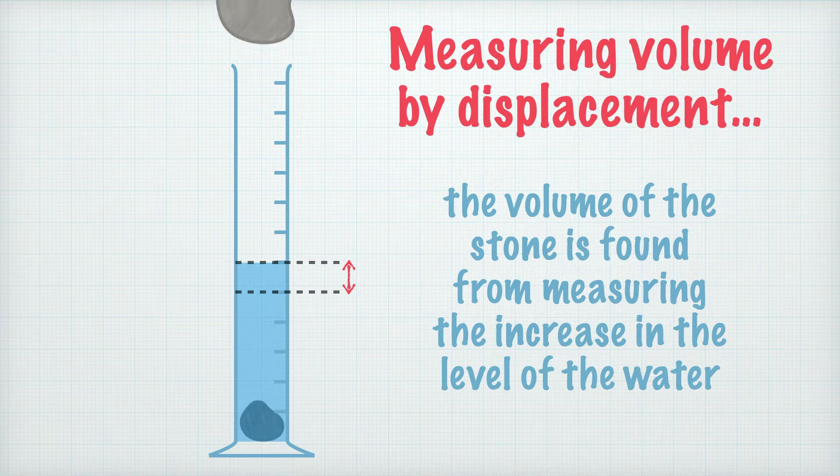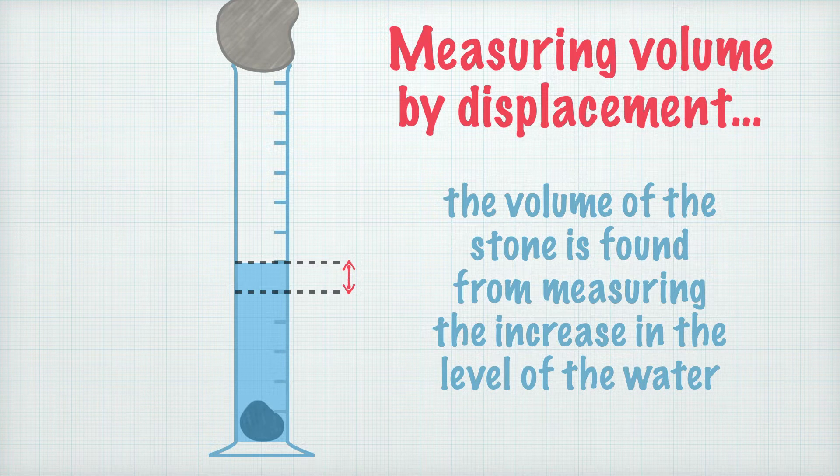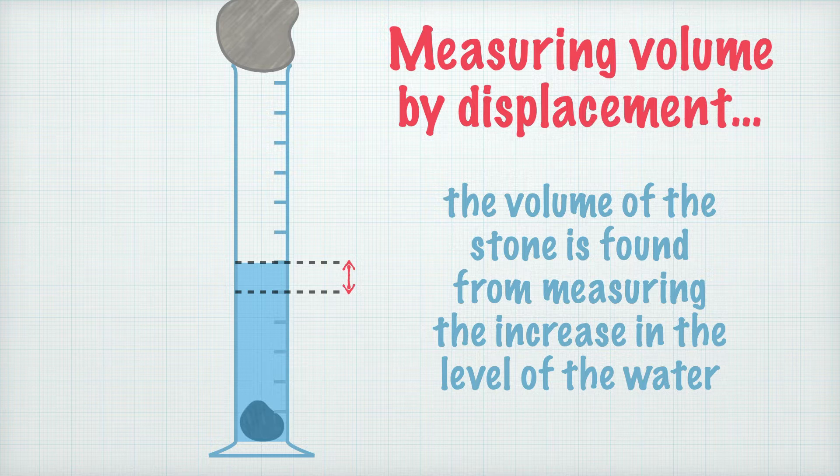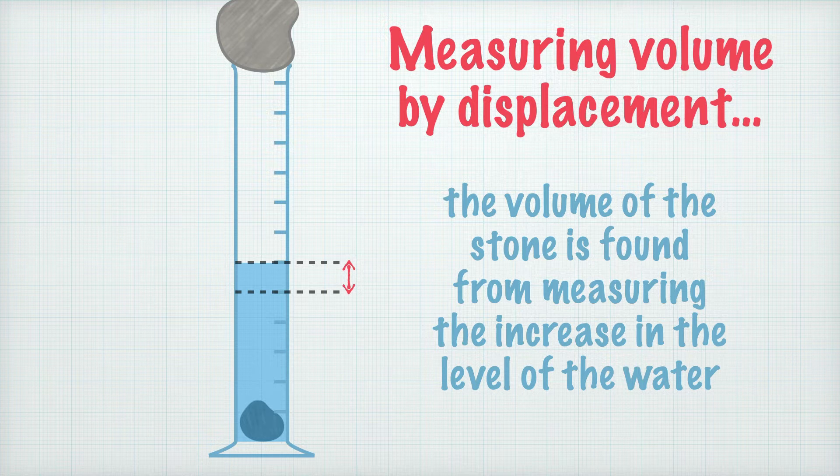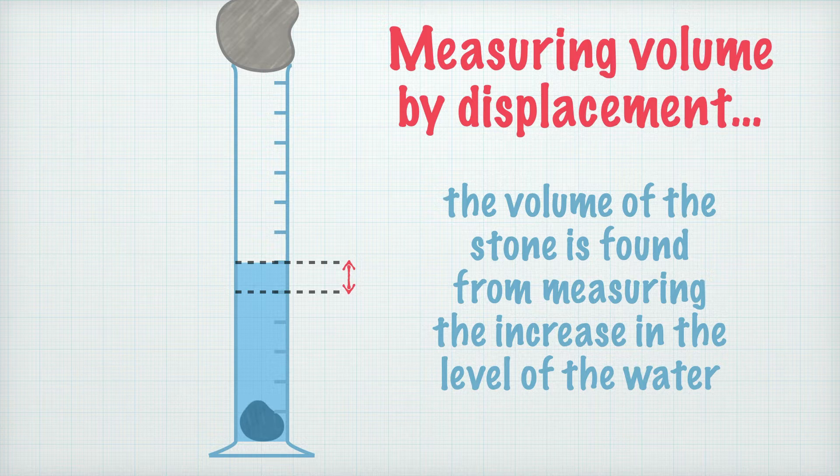What happens though if the stone is too large for the measuring cylinder? Well, we could just use a larger measuring cylinder, but that wouldn't allow us to measure the volume of the stone quite as accurately because the larger the measuring cylinder, the less precise its scale.